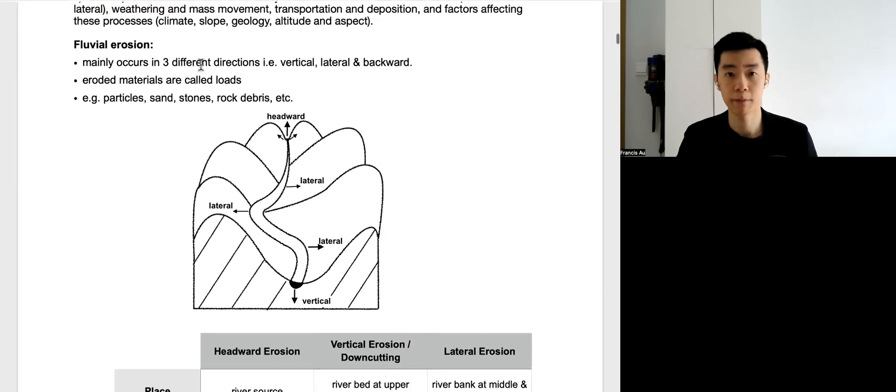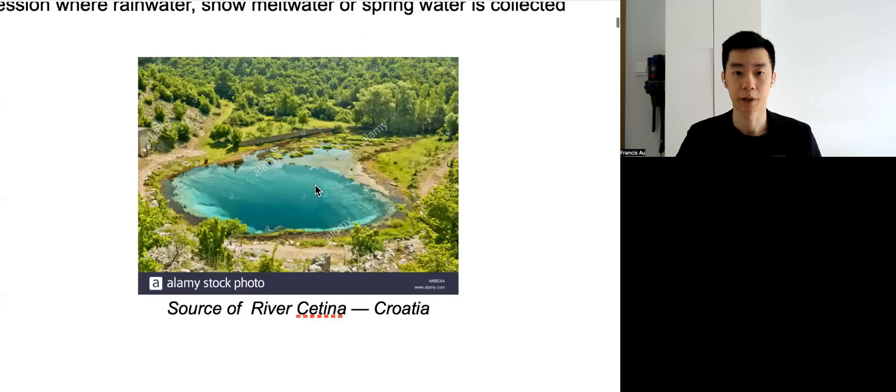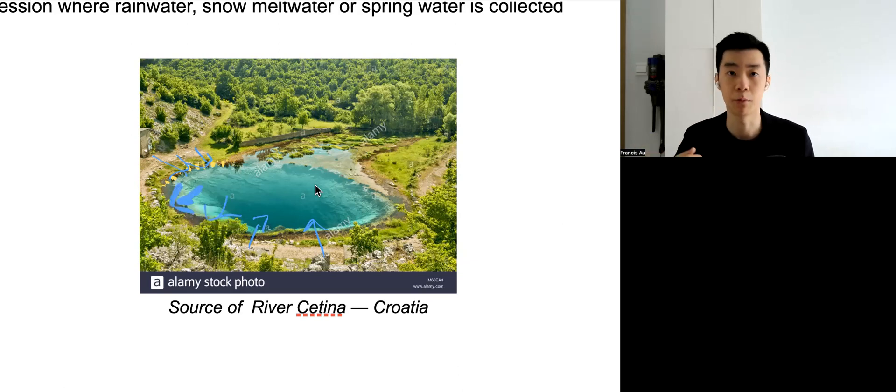Fluvial erosion - three major directions. One is headway at the source of the river. Let me show you the photo. What happens is when the river overland flow is washing into the river source, it is washing away the sediment. You can see small sediment over here. When we have rainfall, overland flow washing away this sediment into the source of the river, it's going to remove and potentially extend the river source further backward. That we call headway erosion, meaning the river length is increased.